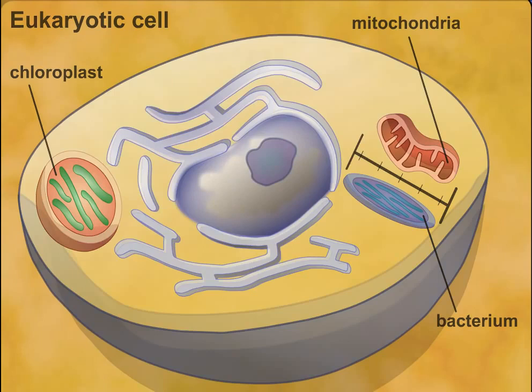4. Mitochondria appear to have been derived from purple bacteria and chloroplasts derived from photosynthetic bacteria.